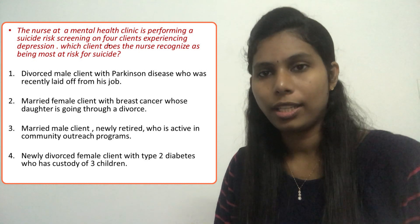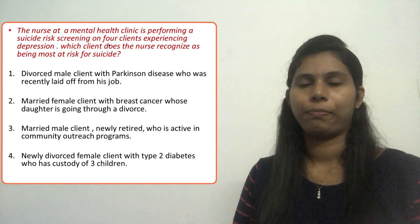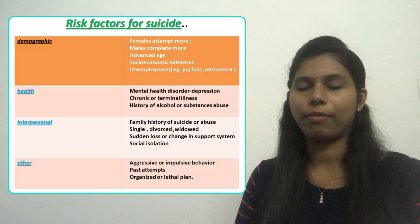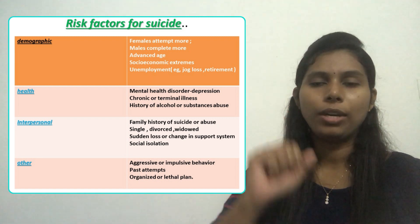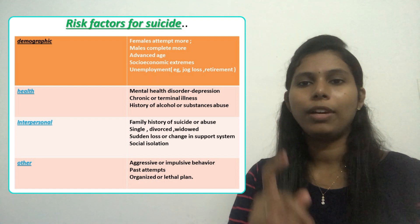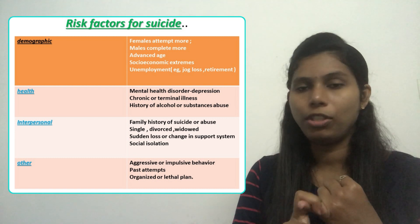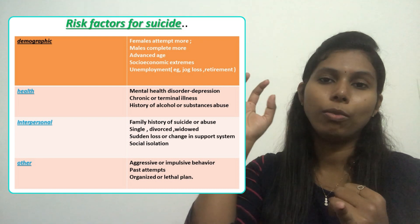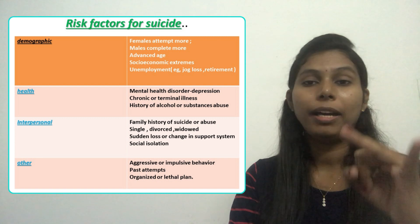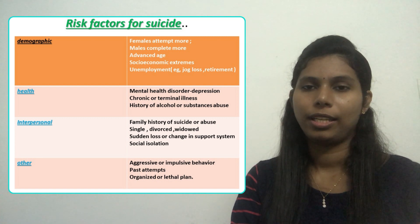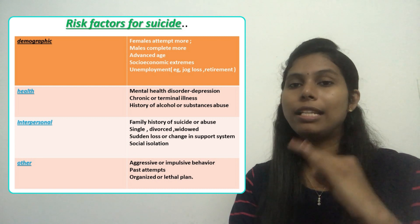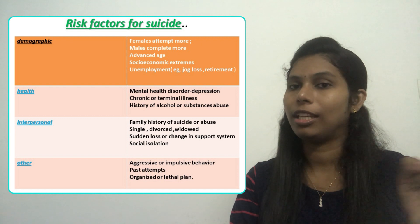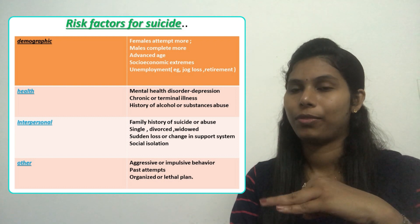Before selecting the answer, we'll study the main risk factor groups for suicide. The first group is demographic factors. Females attempt suicide more compared to males, but males complete more — that is the key difference. Males make fewer attempts, but when they do attempt, they complete it.